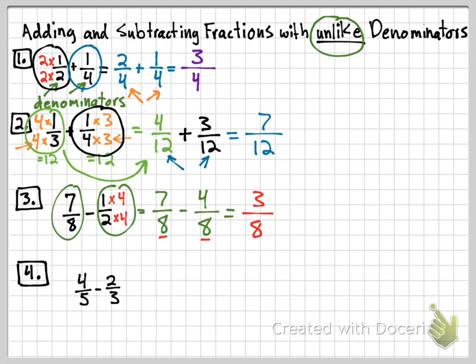In some cases, like number two, you have to multiply both of the denominators. In problems one and three, you only multiply one. That's the part where you have to decide if you multiply one or both. For number four, do I multiply one of them or both of them? In this case, I'm going to multiply both. I'll explain a rule that always works: one good rule is to multiply the denominators by each other.